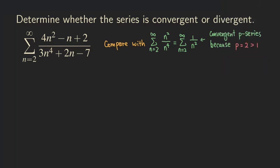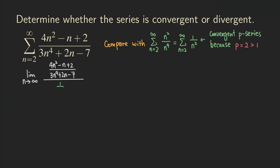So now we are going to set up the limit. When we set up the limit, we are going to have a large quotient. So the numerator of the large quotient is the original expression: four n squared minus n plus two, over three n to the fourth plus two n minus seven. And then the denominator of the large quotient is one over n squared.